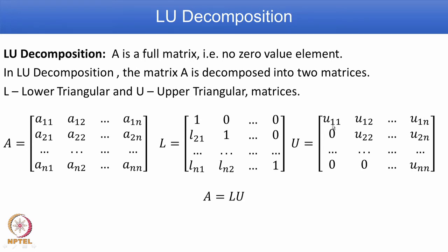For the U matrix, the lower part below the diagonal is zero. The values U11, U22, through UNN are along the diagonal, and the upper part is filled with values.